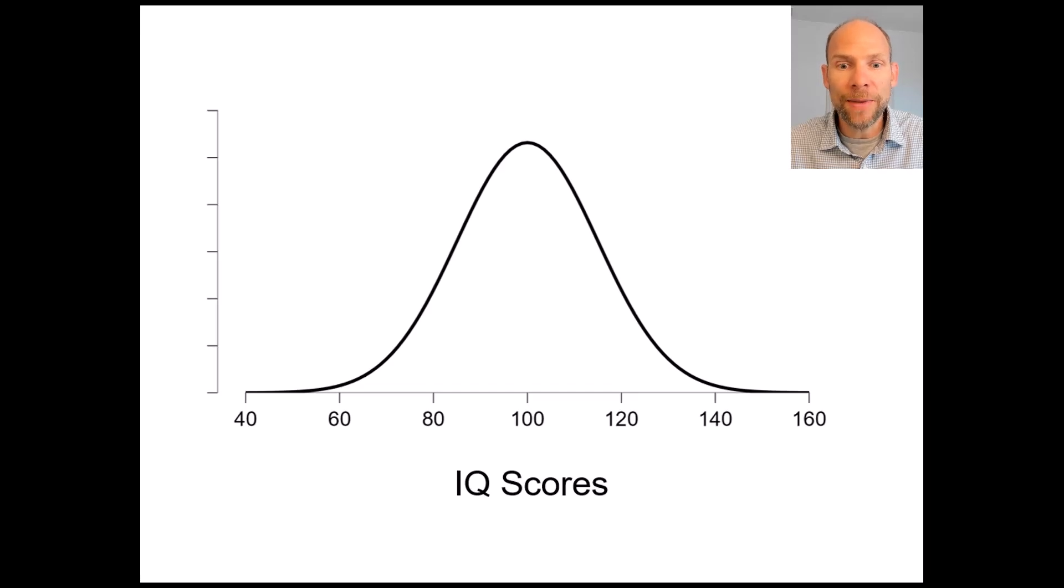I want to explain this based on an example so that it becomes clearer how this is or in which way this is a bad idea. So let's assume that we have IQ scores as an independent variable and perhaps we want to predict job success based on IQ scores.